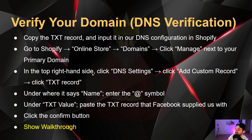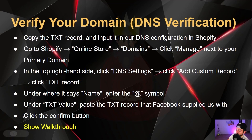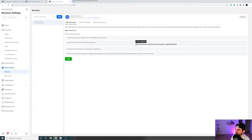In Shopify, go to Online Store > Domains, then click Manage next to your primary domain. On the right-hand side, click DNS Settings, then click Add Custom Record and add a TXT record. Under Name, enter the @ symbol only. Under TXT Value, paste the TXT record that Facebook supplied, then click Confirm.